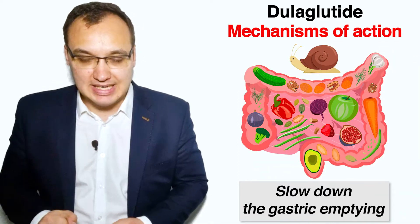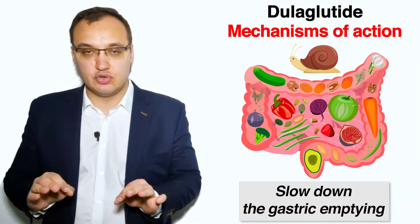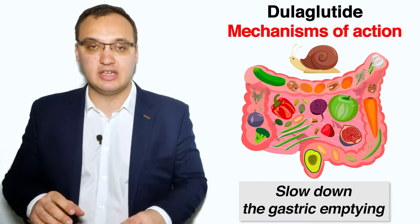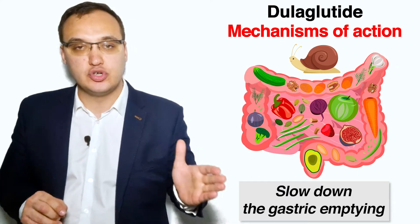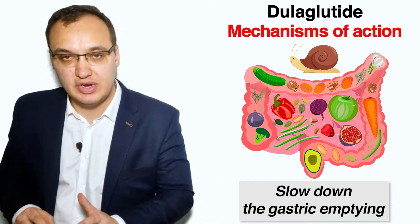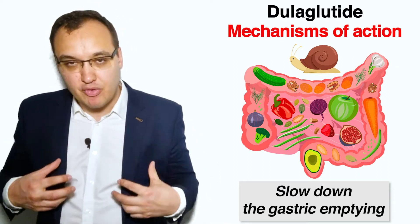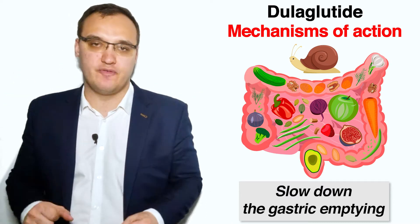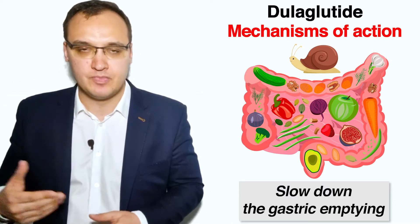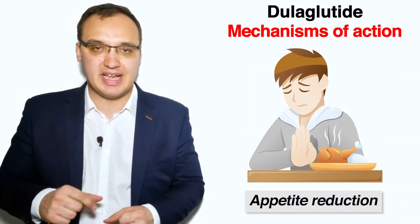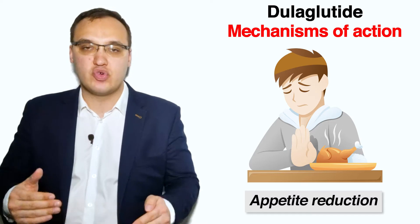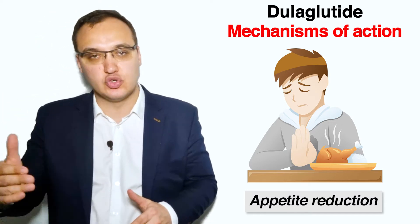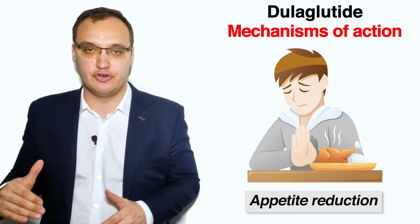The fourth mechanism of dulaglutide is to slow down gastric emptying, meaning food would move more slowly through the stomach and prevent a massive spike of glucose in the blood after a meal. The fifth mechanism causes a reduced appetite, which decreases glucose absorption further.